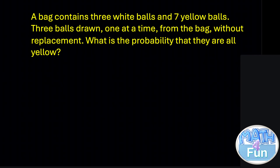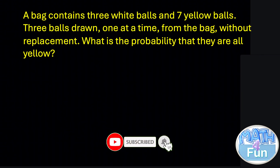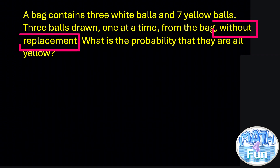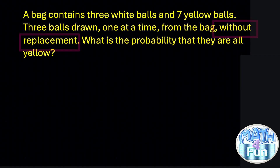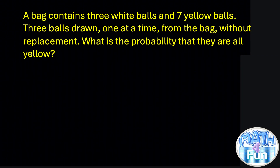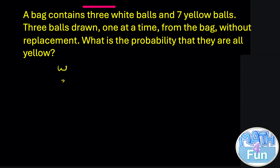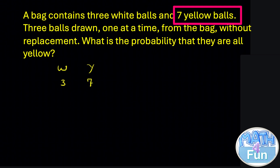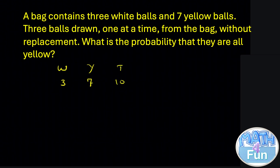Look at this question. They said: a bag contains three white balls and seven yellow balls. Three balls are drawn one at a time from the bag without replacement — that word is very important. What is the probability that they are all yellow? So, white balls: 3, yellow balls: 7, and the total is 10.